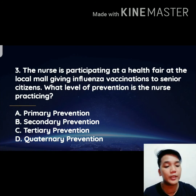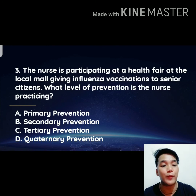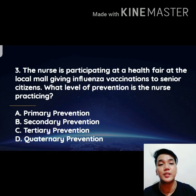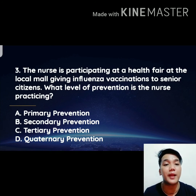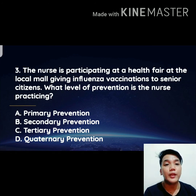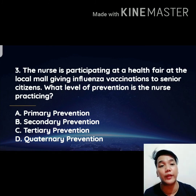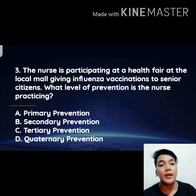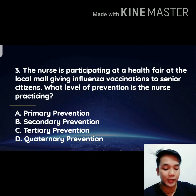Number three: the nurse giving influenza vaccination to senior citizens at a health fair. There is no quaternary level of prevention. Since vaccination is immunization — which is under the 3I of primary prevention — the correct answer is letter A, primary level of prevention, because immunization is done to prevent disease.